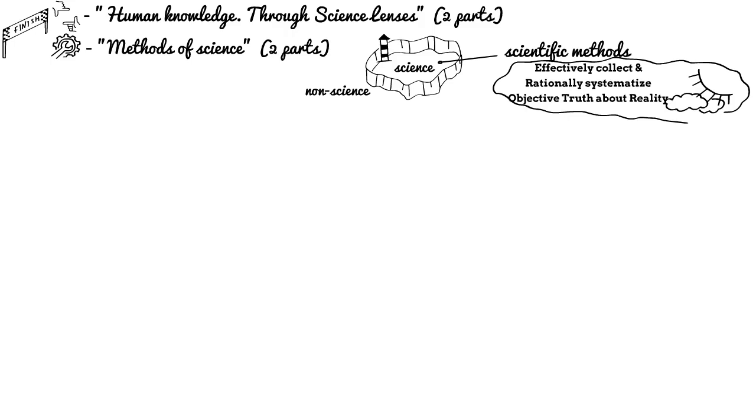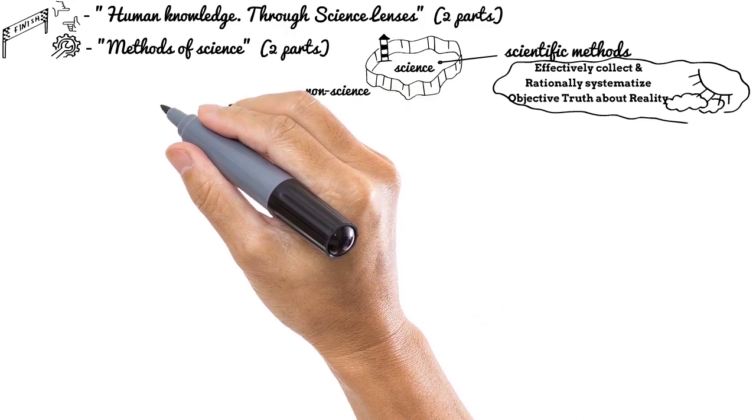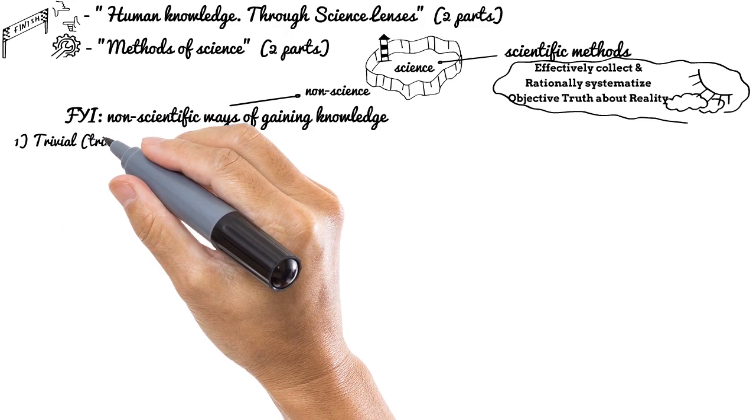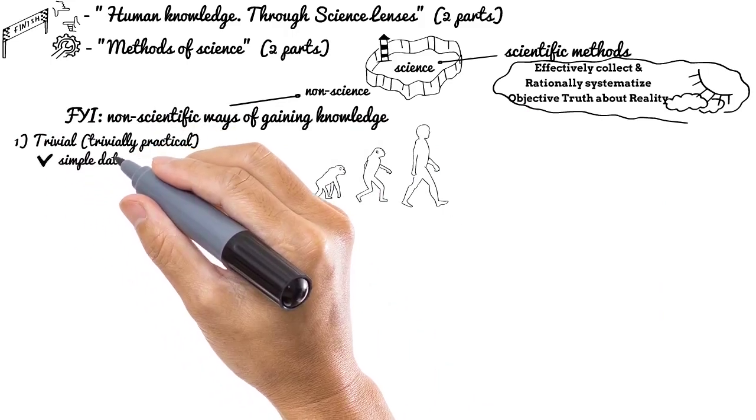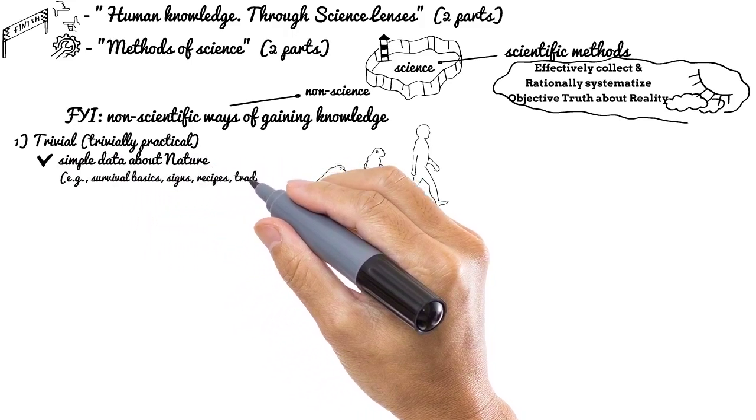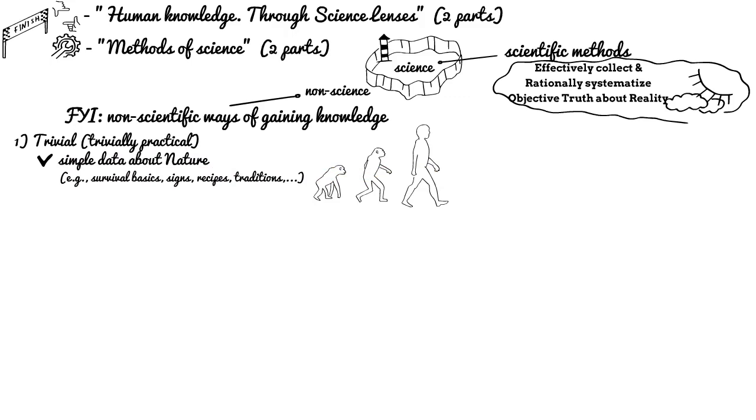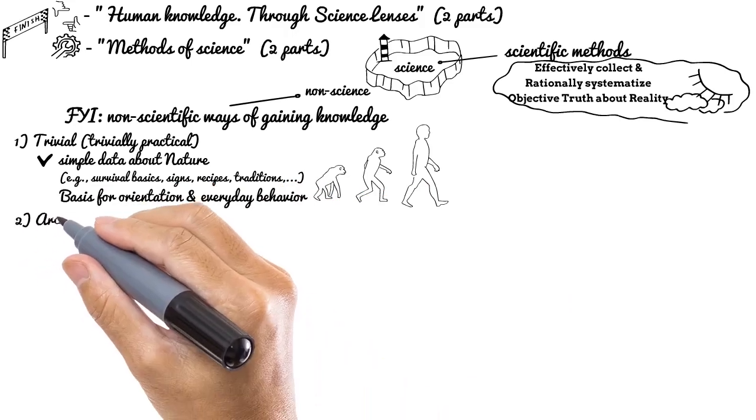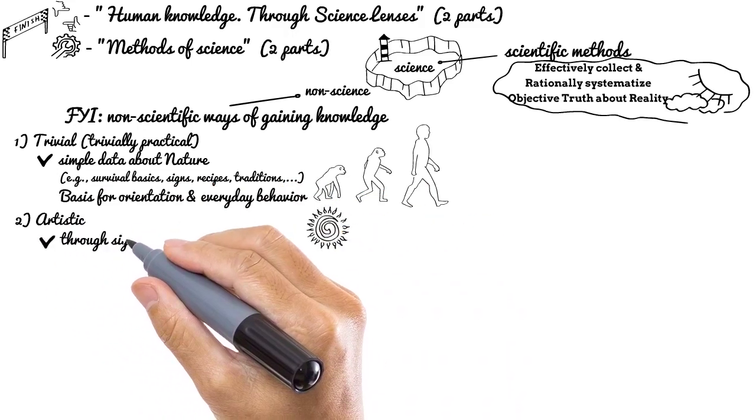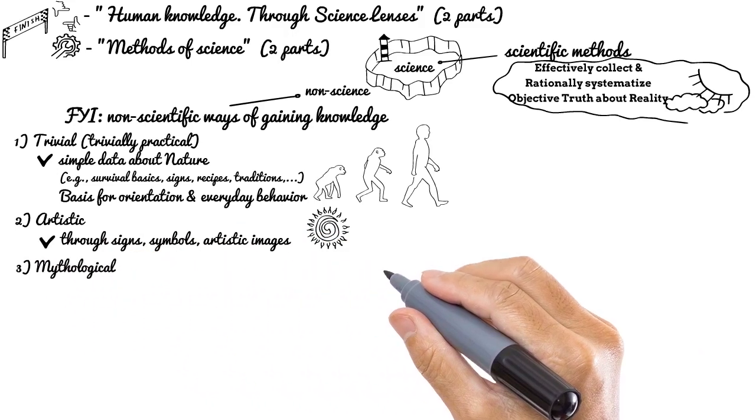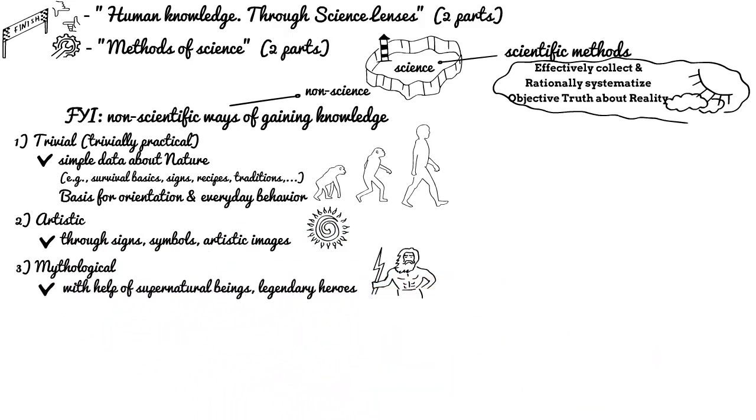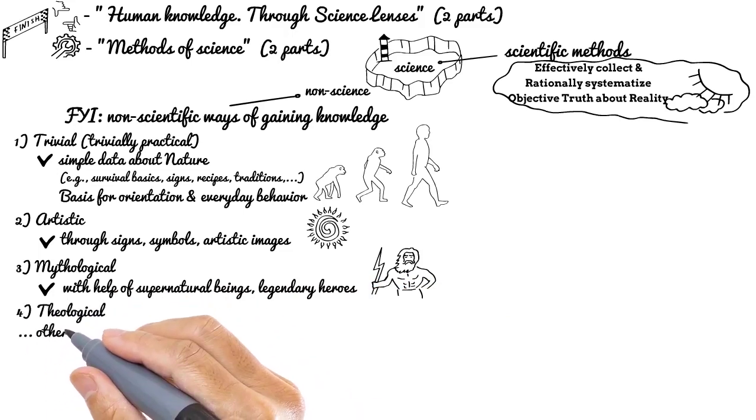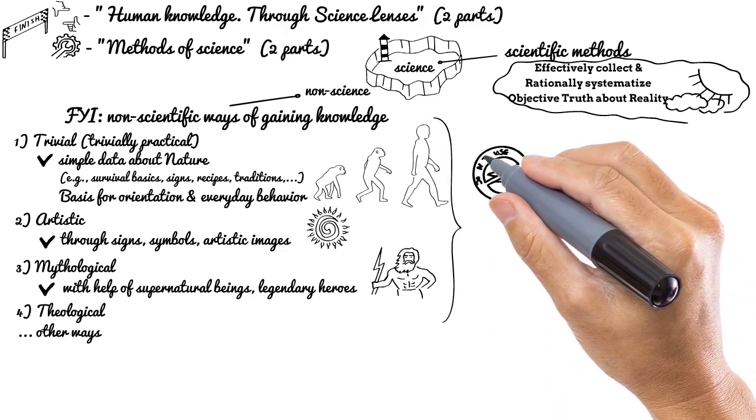Some of the existing non-scientific ways of gaining knowledge are: Trivial or trivially practical, which collects knowledge from early stages of human history and delivers simple data about surrounding nature, including common sense survival basics, recipes, personal experience, and traditions. Artistic, which tries to reflect reality through signs, symbols, and artistic images. Mythological, considered to be peculiar for historically primitive human cultures, tries to explain reality with the help of personified supernatural beings and legendary heroes. Theological, and some other ways of gaining knowledge.